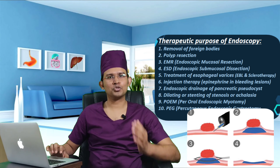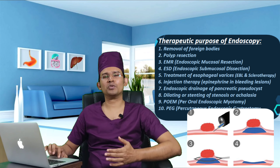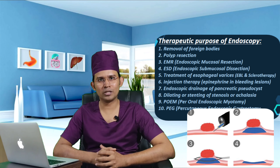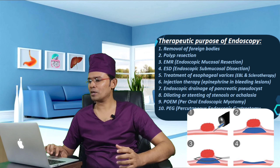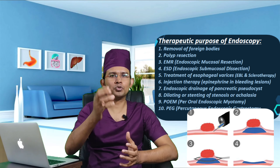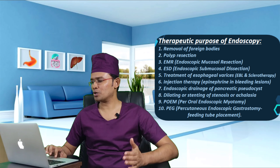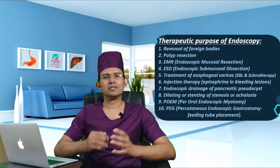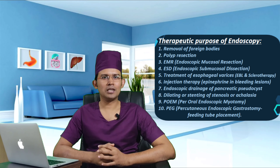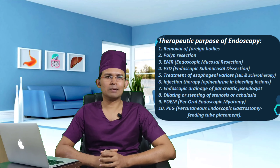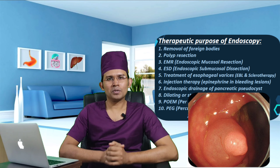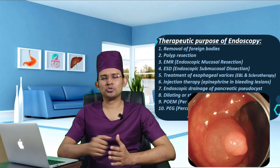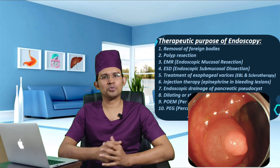Number two is polyp resection. When polyps are found in the GI system, they need to be removed. This polyp is removed using the EMR procedure, or endoscopic mucosal resection procedure.